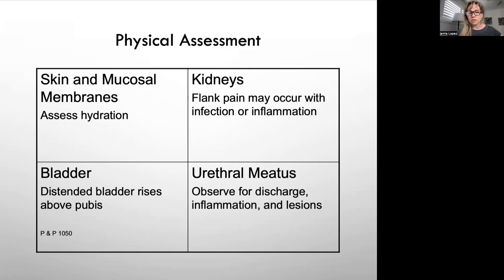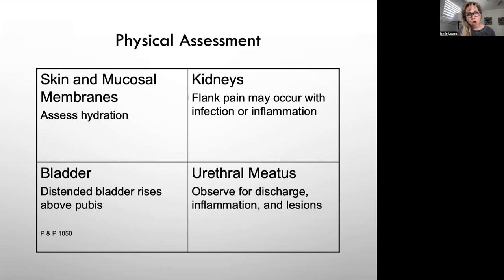If the meatus has drainage or is red and swollen, that indicates infection. The male's meatus is normally a small opening at the tip of the penis — inspect it for discharge, lesions, or inflammation. For the uncircumcised client, retract the foreskin to see the meatus. Normally it is dry, pink, and uninflamed. If you see an inflamed meatus, you'll know something isn't right.